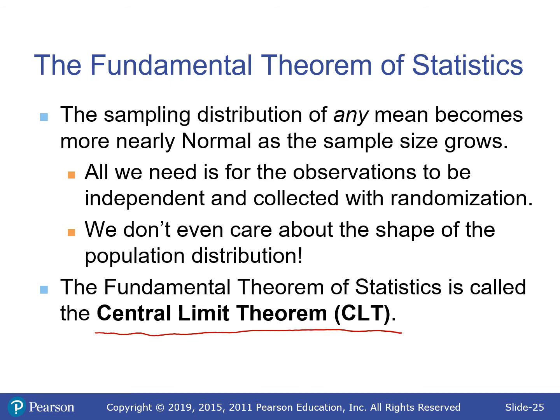The CLT states: the sampling distribution of any mean becomes more nearly normal as the sample size grows. All we need is for the observations to be independent and random. Critically, we don't care about the population distribution's shape. Even if it is very skewed, the CLT says that if your sample size is large enough, the sampling distribution will be approximately normal.